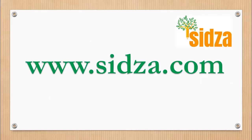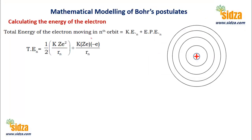Welcome to sitza.com. This lesson is about calculating the energy of an electron in Bohr's model of an atom. In our last lesson, we learned some of the postulates of Bohr's model, and here we're going to discuss the energy of an electron in an atom.